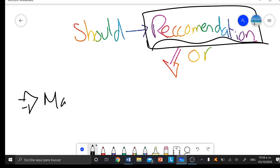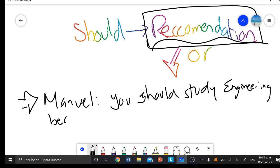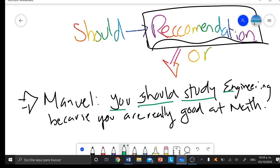Let me rewrite it again so it's a little more clear. It will be: Manuel, you should study engineering because you are really good at math. Here we are giving a recommendation to Manuel. Le estamos dando una recomendación a Manuel. Manuel, tú deberías estudiar ingeniería porque eres muy bueno en matemáticas.